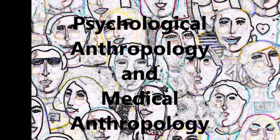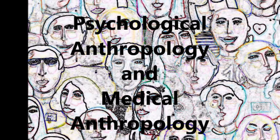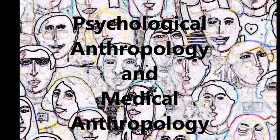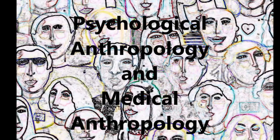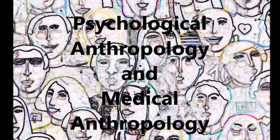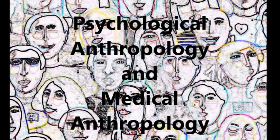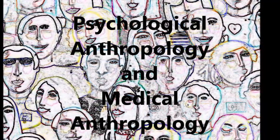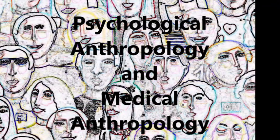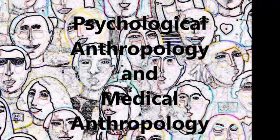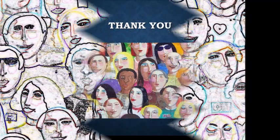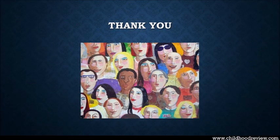There are some other important subfields in anthropology, but they are connected with one or more of the four major subfields. For example, psychological anthropology connects psychological topics such as mental health and well-being with anthropological concepts. And medical anthropology covers health, healing, folk medical systems, and health-seeking behavior and practices. We will talk about these important fields later on. Thank you for watching, and don't forget to subscribe to my channel.